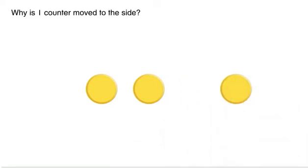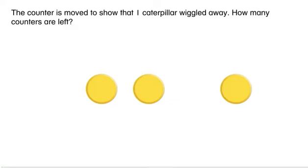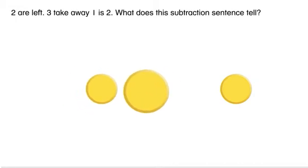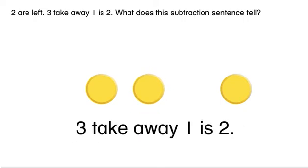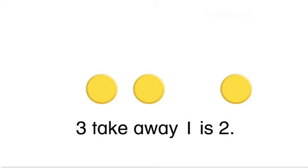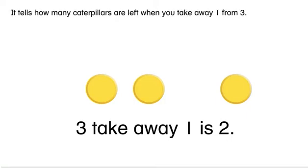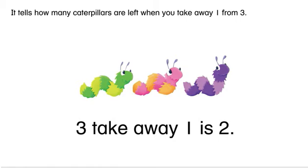The counter is moved to the side to show that one caterpillar wiggled away. How many counters are left? Two are left. Three take away one is two. What does this subtraction sentence tell?